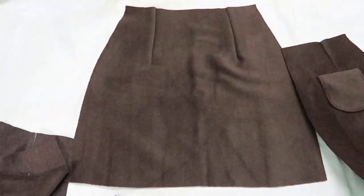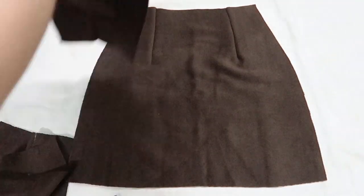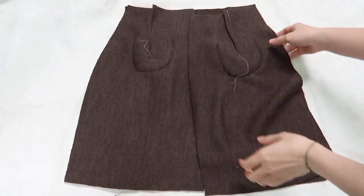Now, I'm going to place two panels of the back side on the front side with right sides together and stitch both sides by sewing machine.